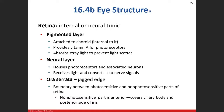The retina has a couple of layers. First, there's the pigmented layer. Whenever you see 'pigmented' in relation to the eye, think melanocytes. This layer's job is to prevent light from scattering by absorbing it. Photons tend to scatter, and the pigmented layer absorbs those stray photons so they don't disrupt your image.